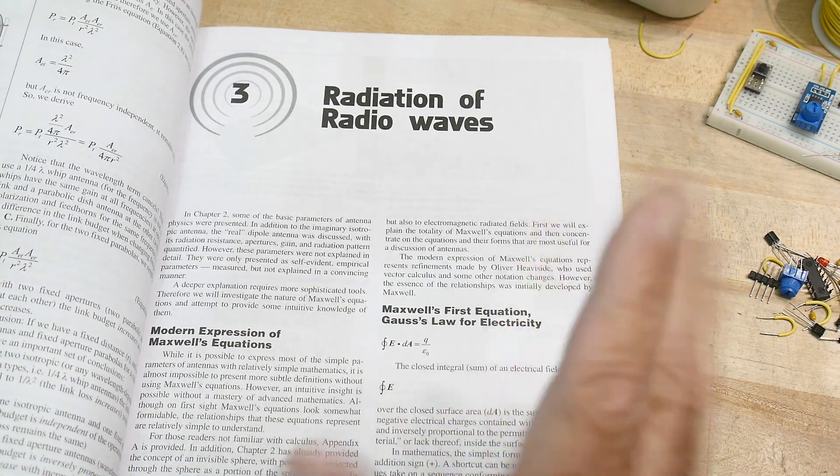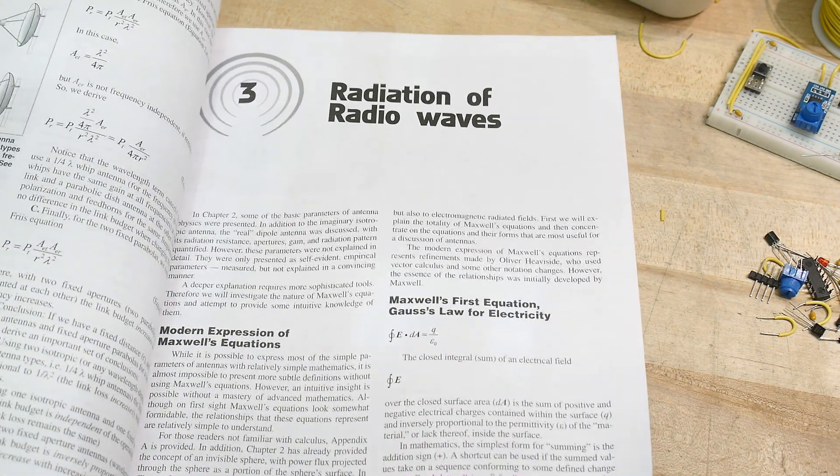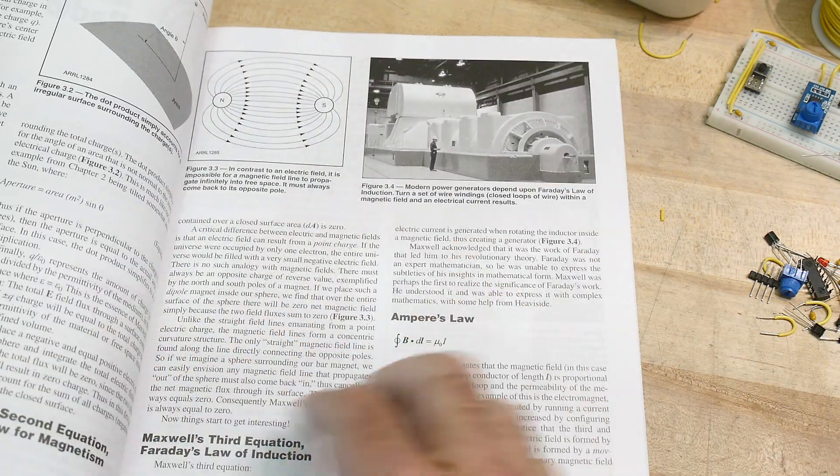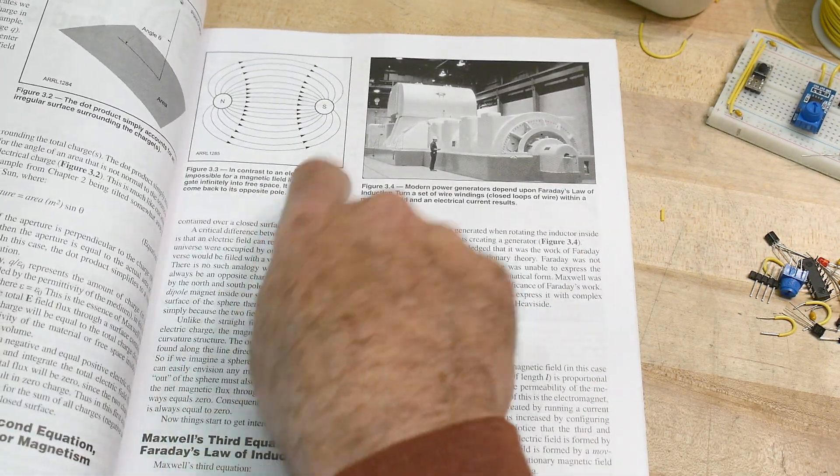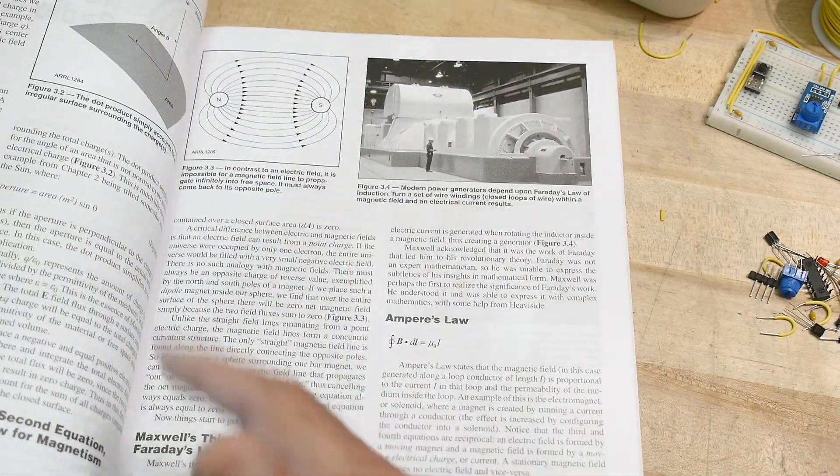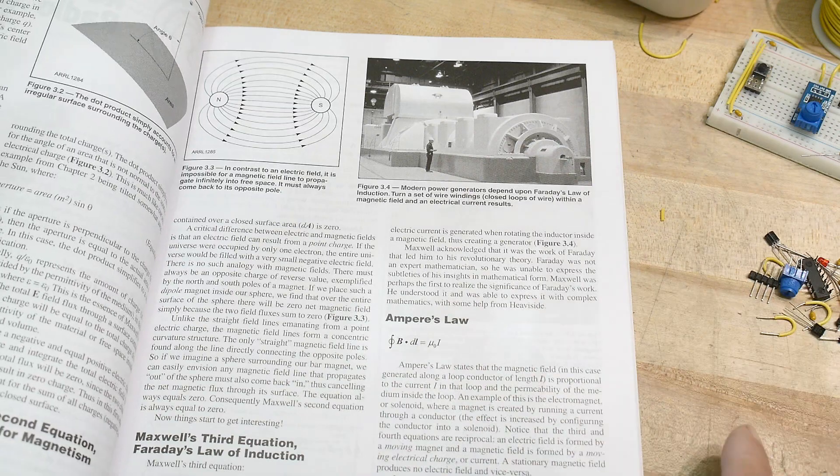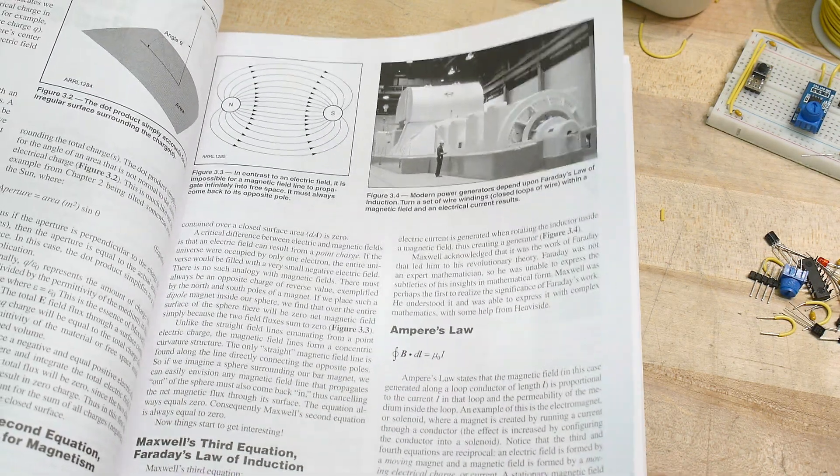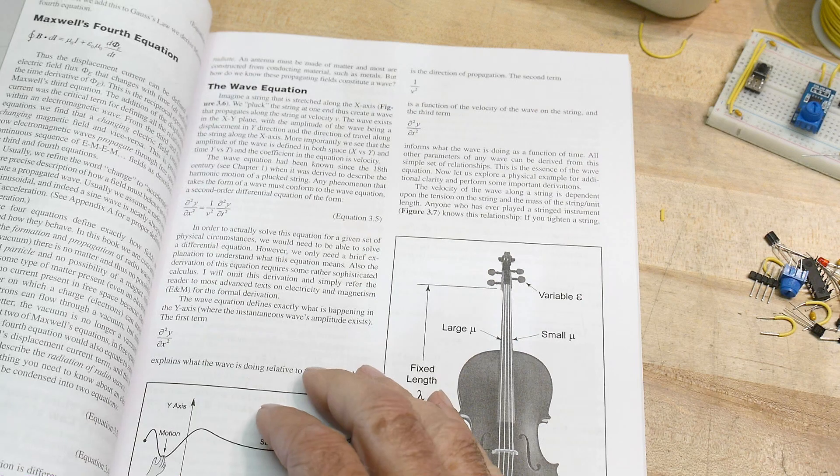It's a bit hand wavy, but it talks about the four equations and what do they mean. You can't have a monopole, flux lines, and one of them's actually Ohm's law anyway.